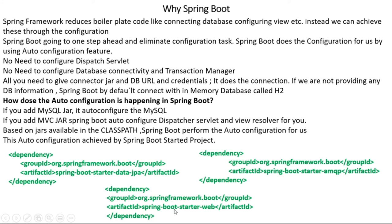Spring Boot provides many starter projects. For example: Spring Boot Starter Data JPA — if you add this, it will configure database connections automatically. Spring Boot Starter AMQP — for the RabbitMQ messaging server; add this starter and RabbitMQ configures automatically. Spring Boot Starter Web — if you add this, your Spring Boot project pulls all JAR files needed to create a Spring MVC application and performs the auto-configuration, including dispatcher servlet setup.